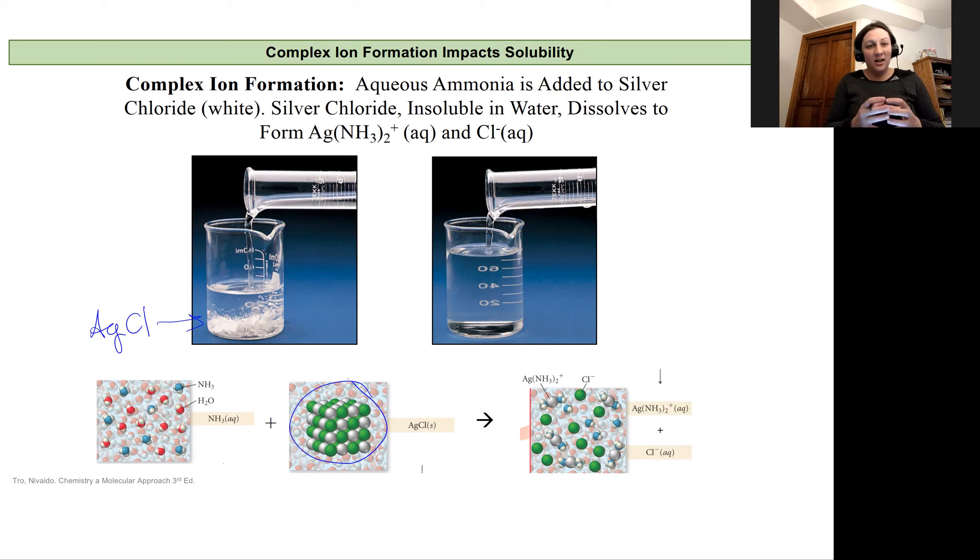Our silver chloride forms this solid, and then if we pour some ammonium in, so here we have ammonium being poured into our solution, we'll see that solid disappear. What's happening is that equilibrium is shifting as that complex ion forms of the silver with the ammonium, and that drives the silver chloride solid to dissolve, to replace those ions that are lost to the complex ion.